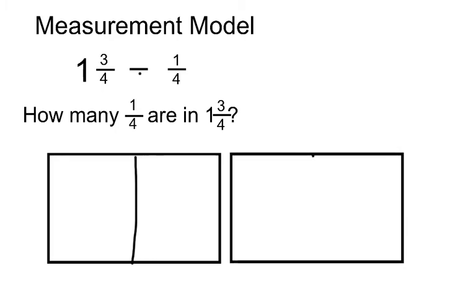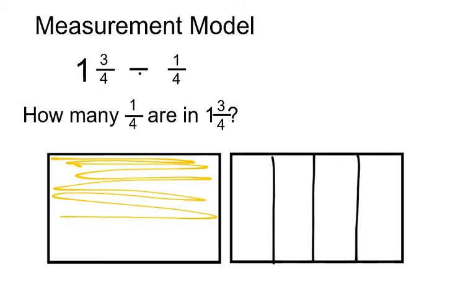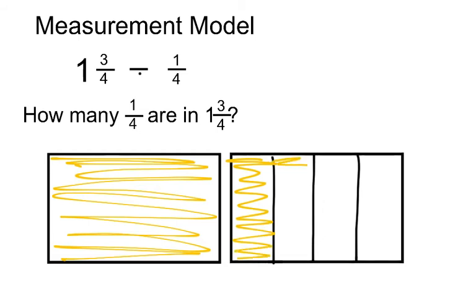Well, first, let's start with our whole. So we have 1 and 3 fourths. So we'll divide this into fourths. And we need 1 whole and 3 quarters. So we have 1 whole and 3 quarters.